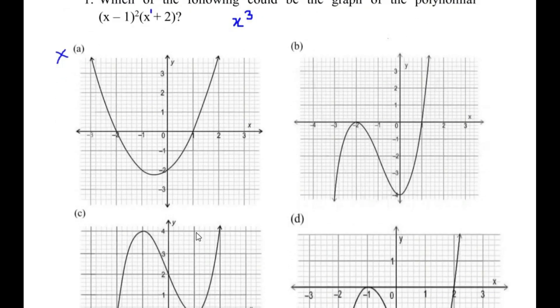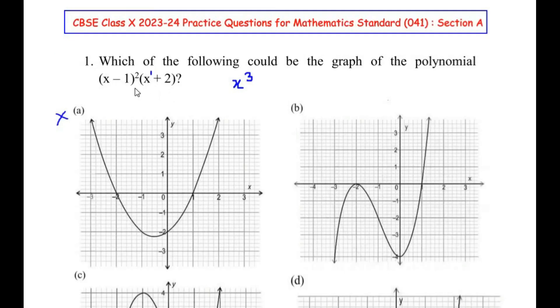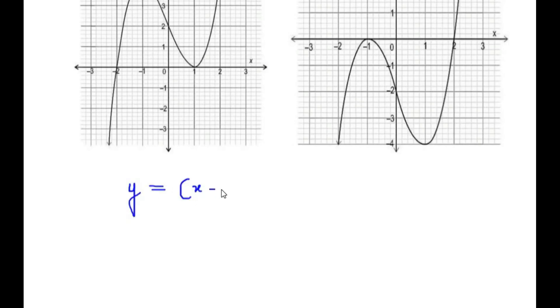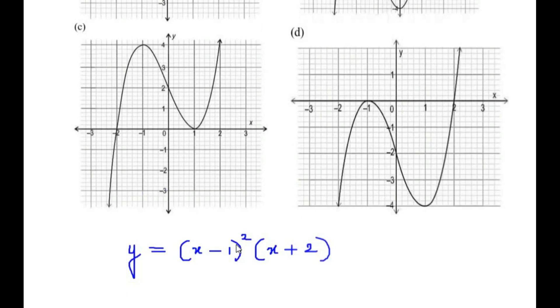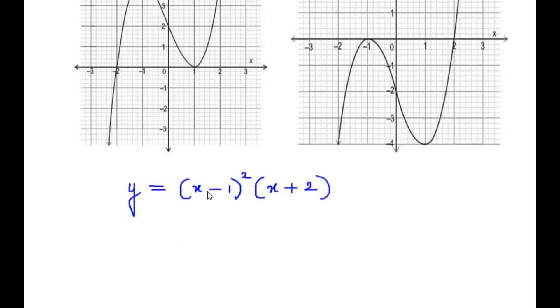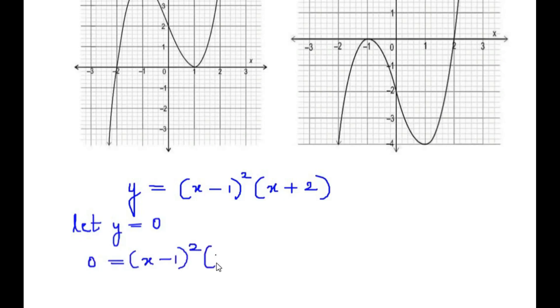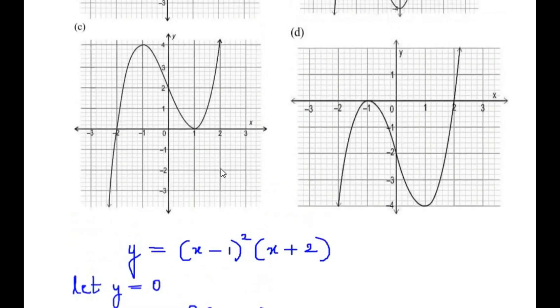Now we have to check out of B, C, and D which represents the given polynomial. Let us first write down the given polynomial: y equals (x minus 1) squared times (x plus 2). We are going to first make y equal to 0 to find out the values of x, since that tells us where our graph is going to touch the x-axis.